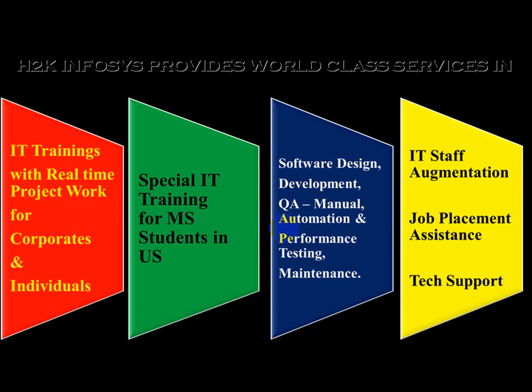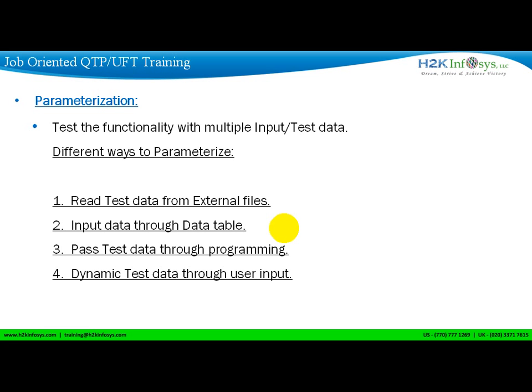Manually it is a very tedious and laborious process. For example, given any functionality, if you want to test the login with 100 different usernames and passwords, manually that is a very tedious task. That is where you use automation — parameterization, in other words called data-driven testing, where the data drives your scripts. The concept is: test the functionality of an application with multiple input data, or multiple data variations.